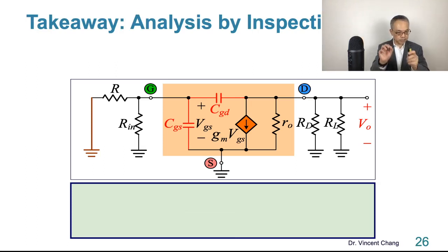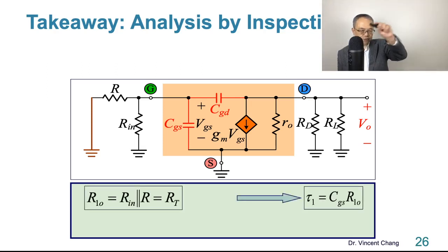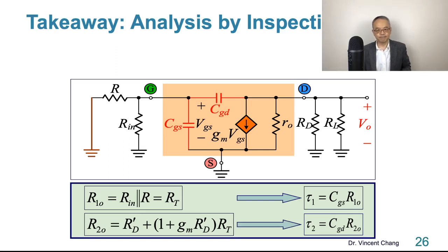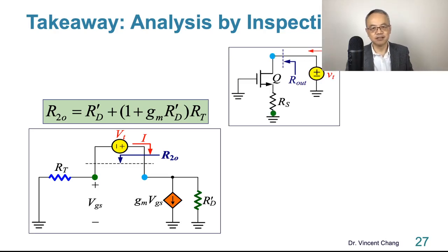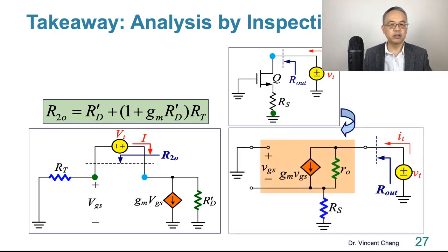This is the major takeaway: analysis by inspection. First one, the resistance seen by C1, the CGS. This is easy. But the tough part is the second. So what is second? Let's practice. R0, which is Rd prime, the parallel of three, plus (1 + mu). What is mu? Gm times Rd prime. And then Rs. The source means the source of MOSFET: source, gate, drain. The source reflected to drain, multiplied by (1 + mu). We just gone through this. Analysis by inspection to solve the R2O.